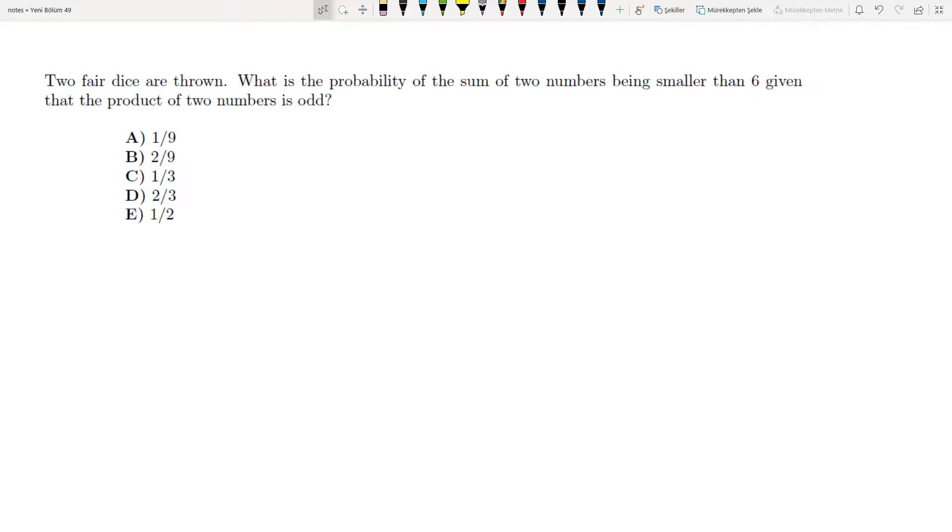Two fair dice are thrown. What's the probability of the sum of two numbers being smaller than six, given that the product of two numbers is odd?